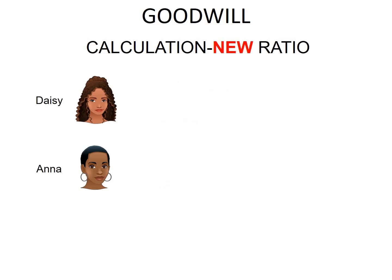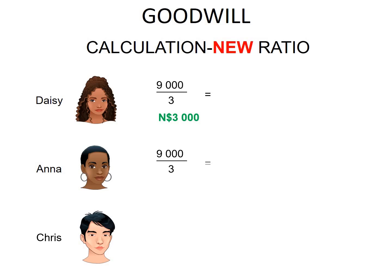Now we need to calculate the new ratio. The new ratio does not only contain Daisy and Anna, but also Chris. We will say $9,000 divided by 3. Why divide by 3? Because profits and losses are shared equally among 3 members, each member will have an equal share. So we divide the $9,000 by 3, and each member will get $3,000.